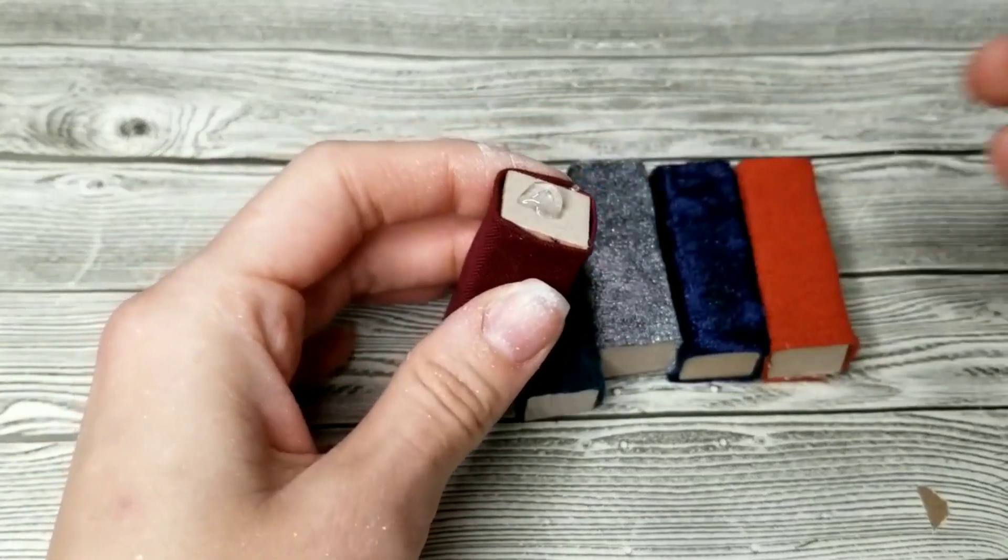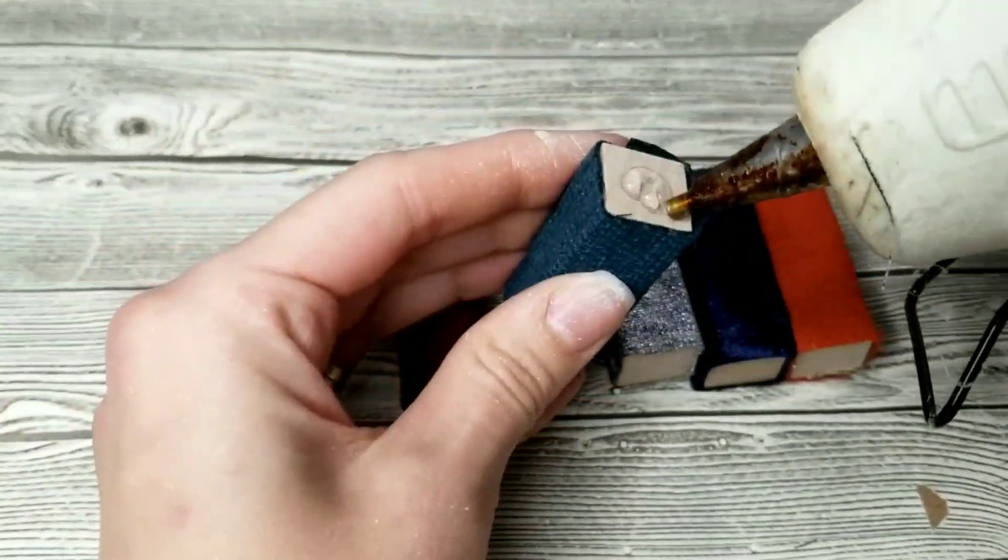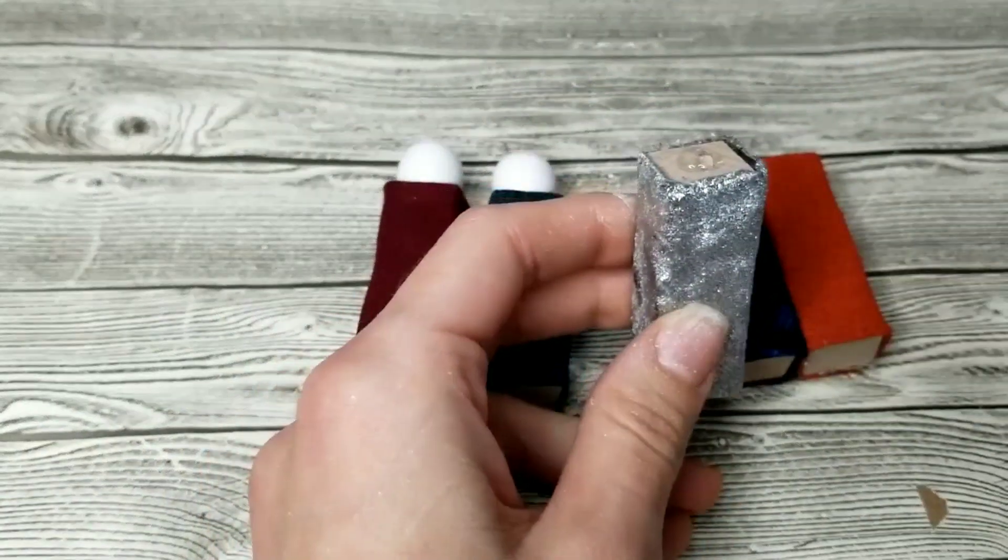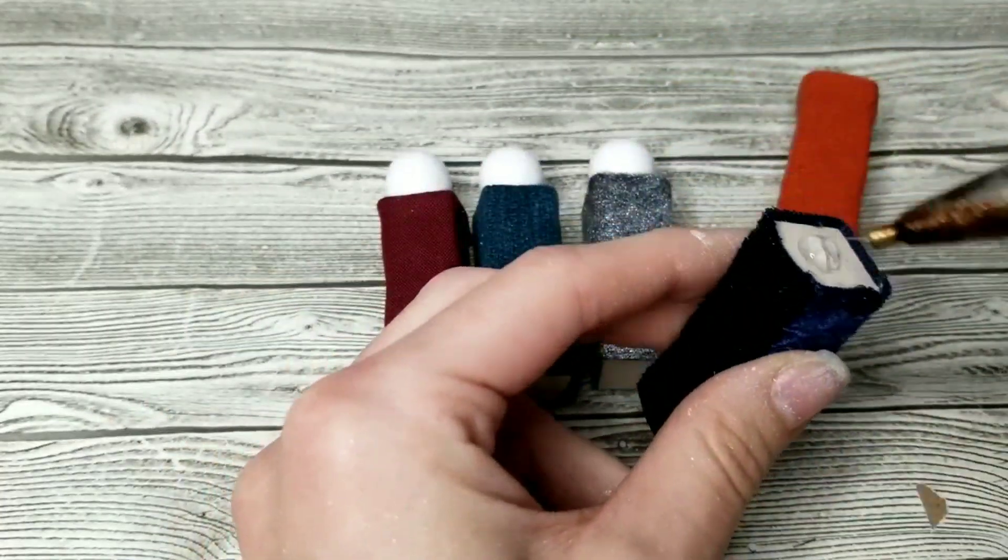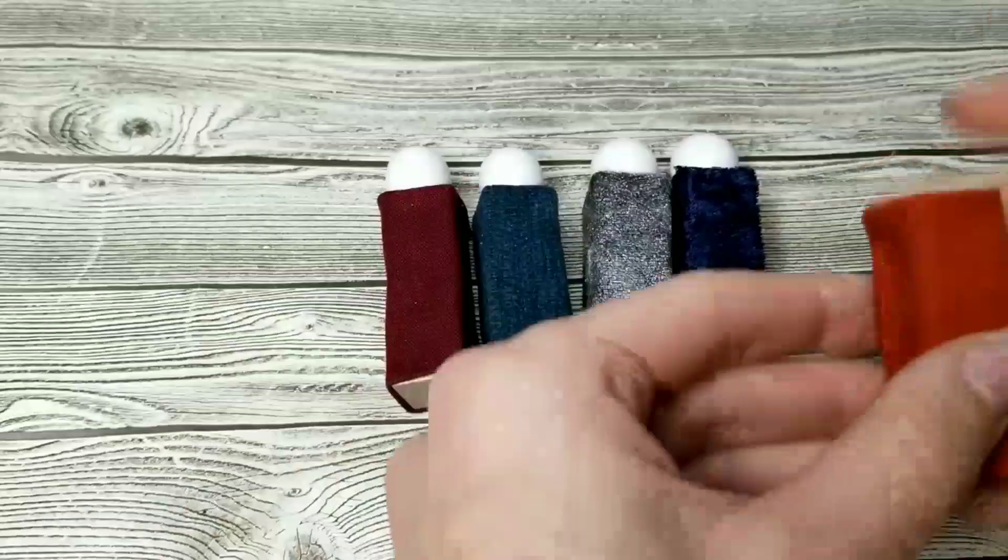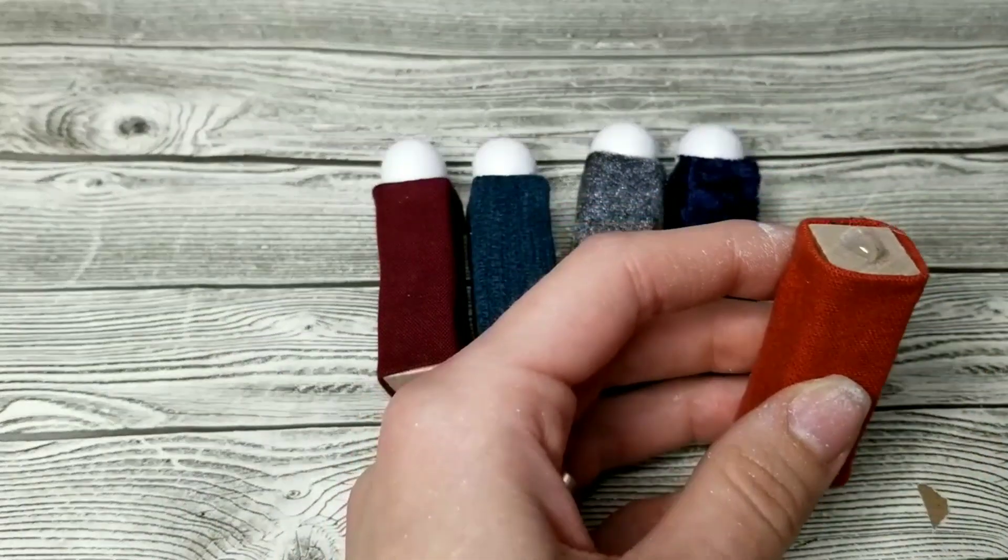Next, I glued my largest white painted beads on one end of each of these blocks to use as the heads, and I used those largest beads on Joseph, the three Wisemen, and the two shepherds.